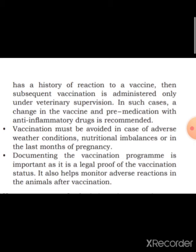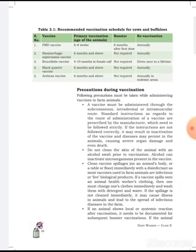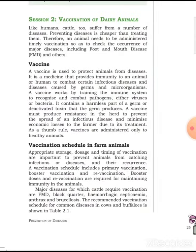Documentation of the vaccination program is important as legal proof of vaccination. It also helps us monitor adverse reactions in the animals after vaccination. Proper documentation of reactions and vaccinations given ensures accountability and supports future vaccination planning.